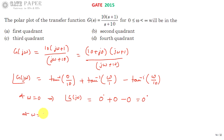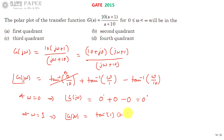The transfer function has a zero at −1 and a pole at −10, so we evaluate at ω = 1. The phase is tan⁻¹(1) − tan⁻¹(0.1), which is 45° − 5.71° = 39.29 degrees.